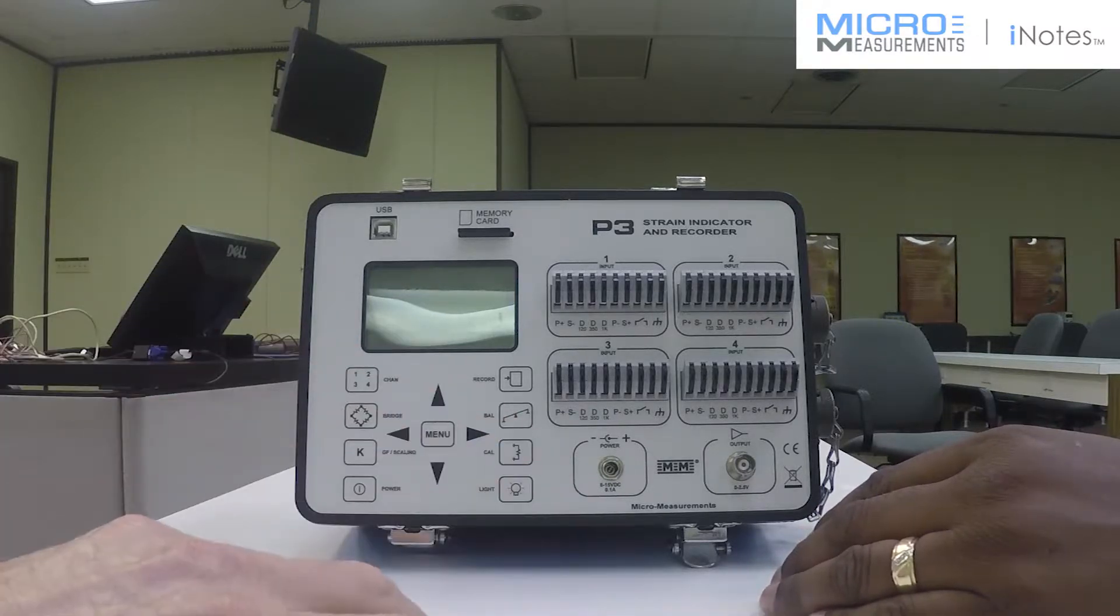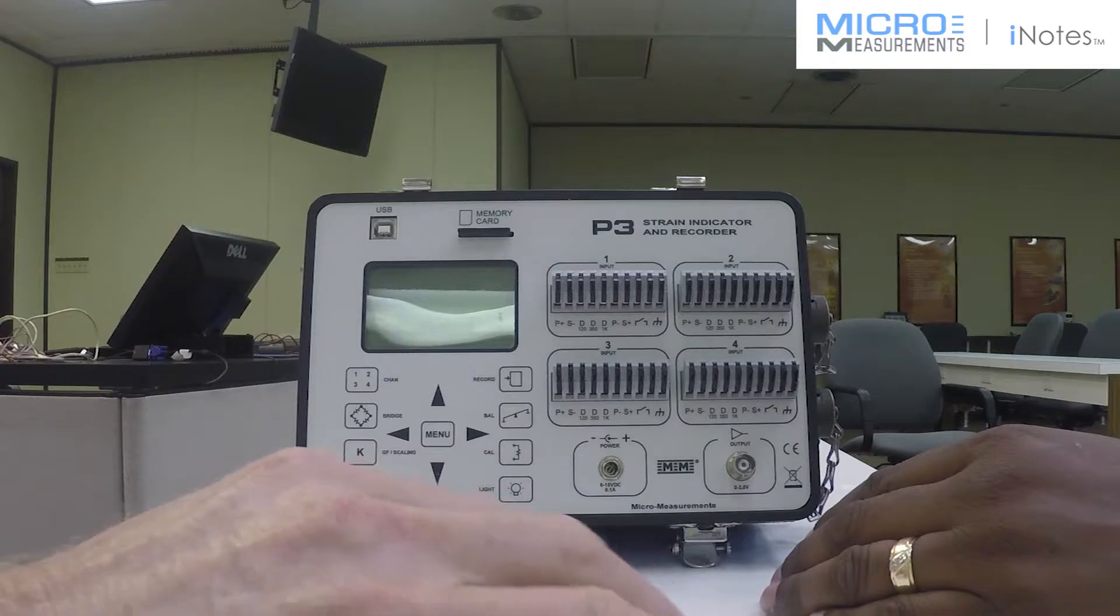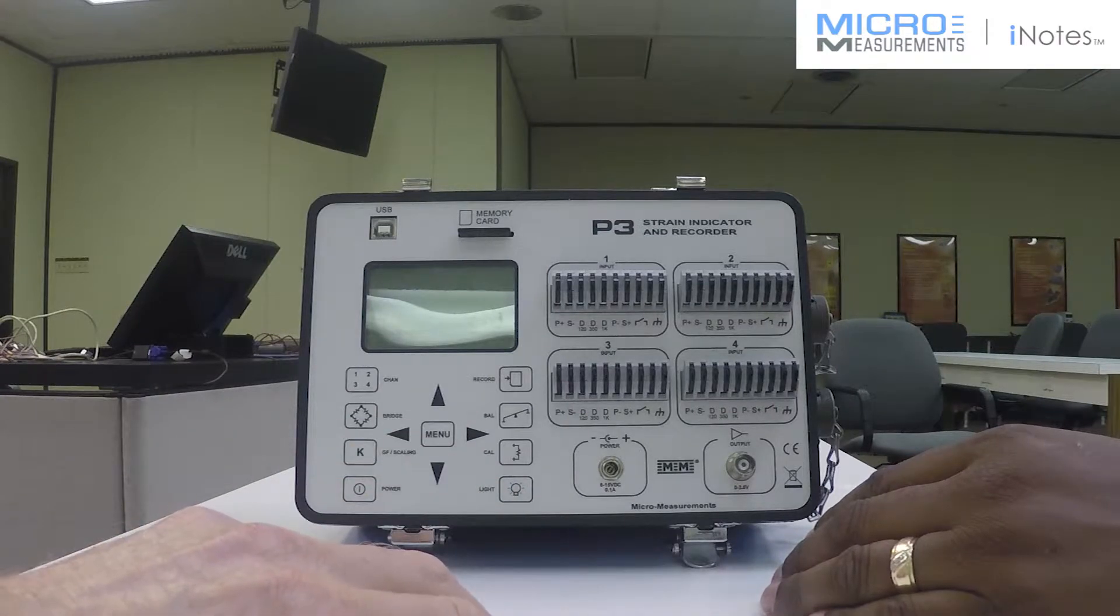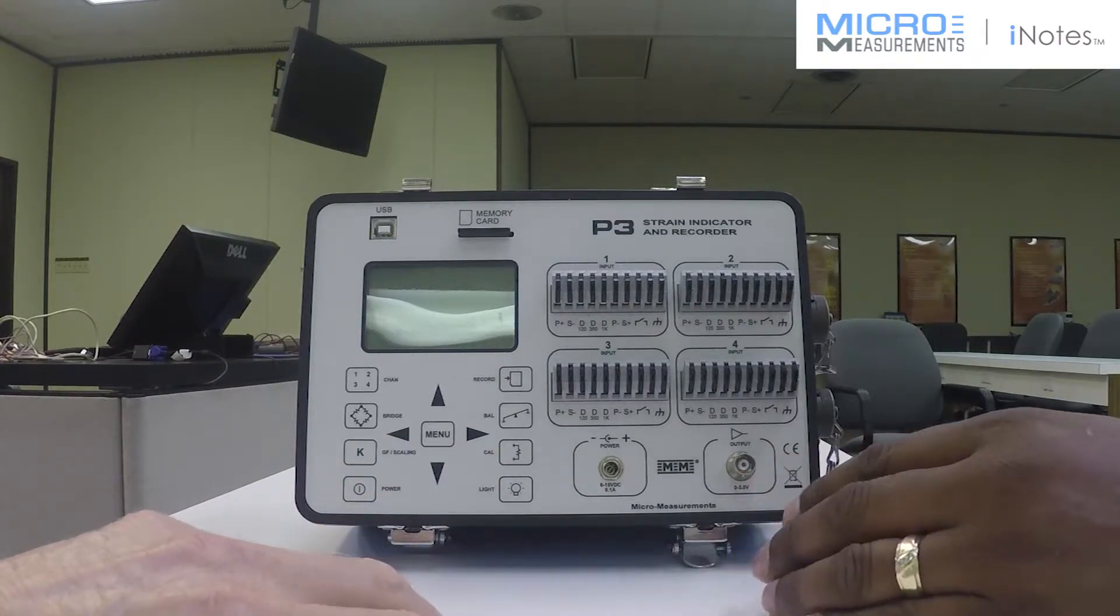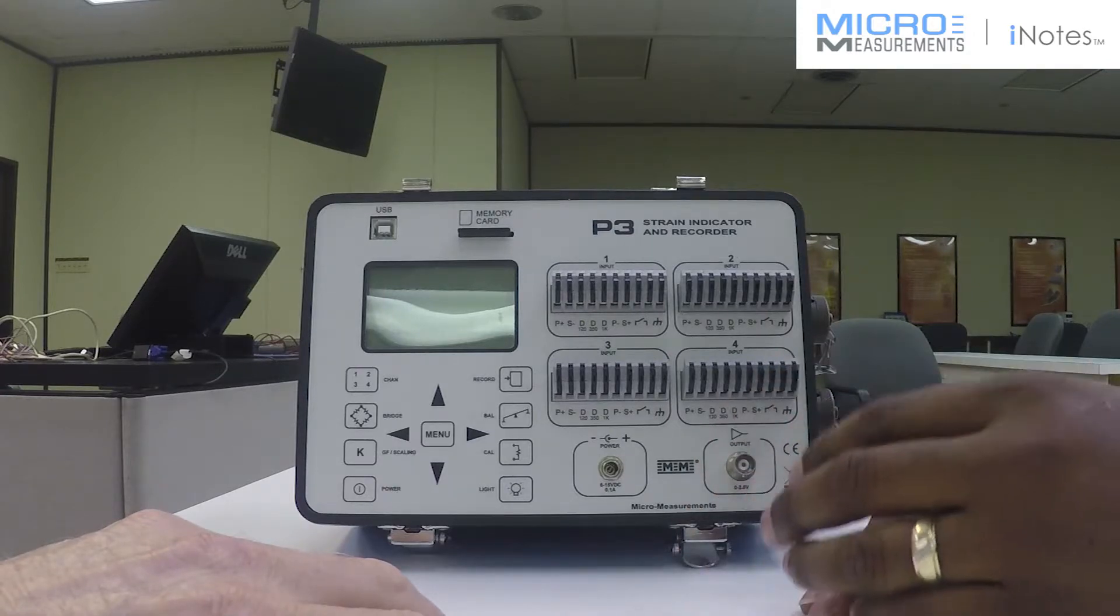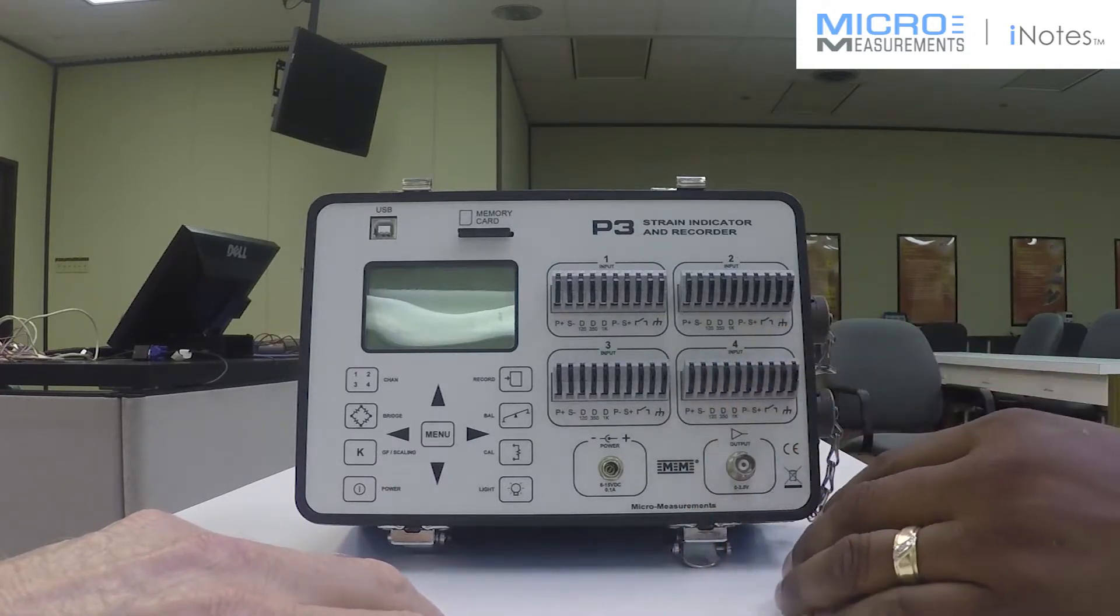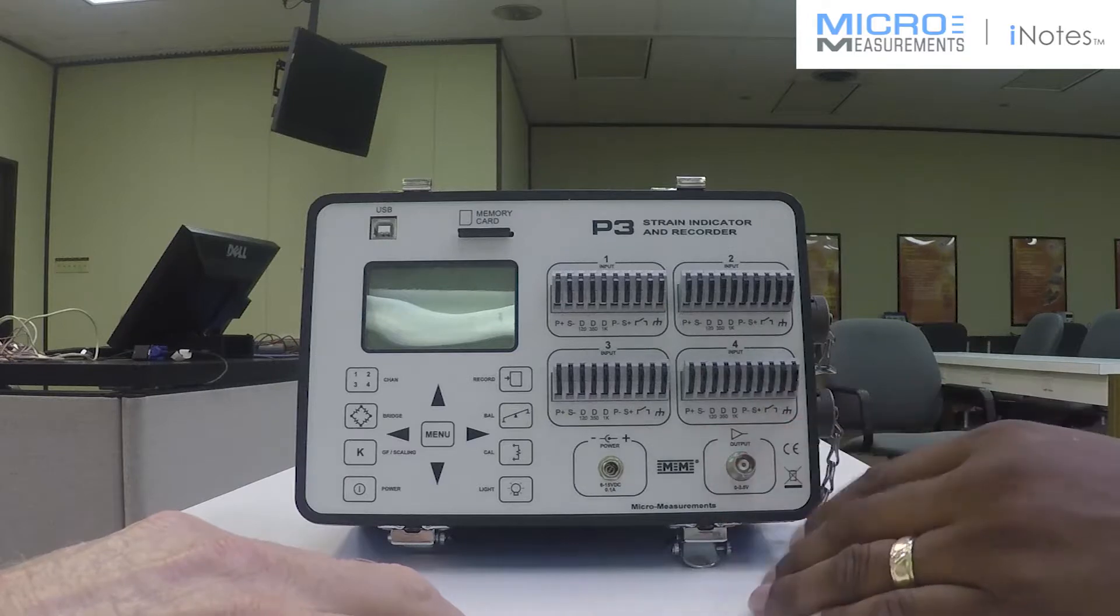I don't see any knobs or adjustments for doing, say, balance or calibration. How is that handled? Well, the system does an auto calibration built in, so there are no pots to adjust to zero out the offset. It's all done internal to the box.